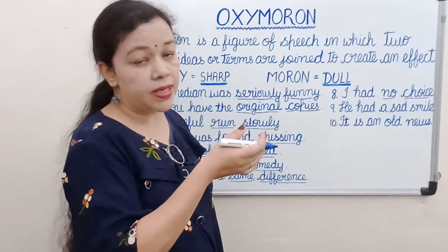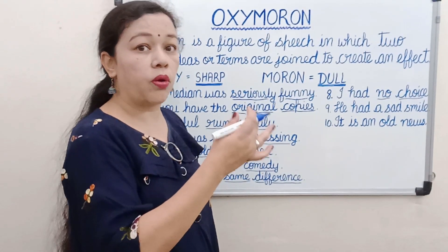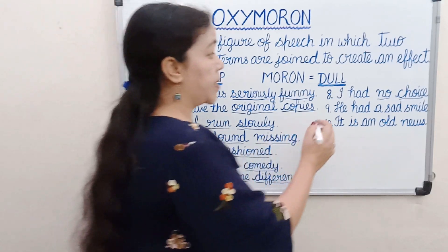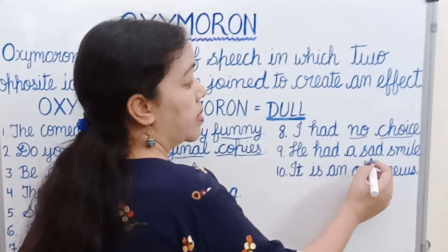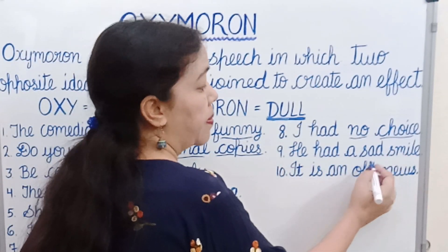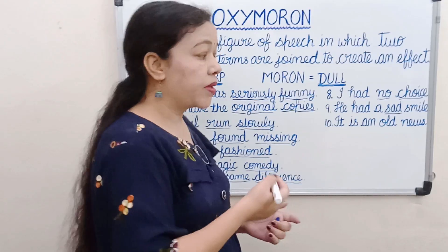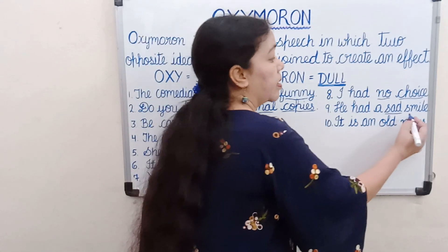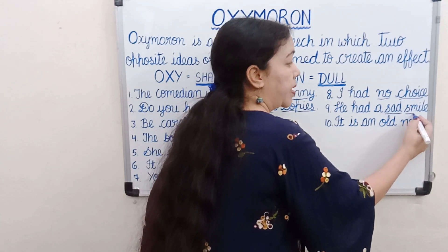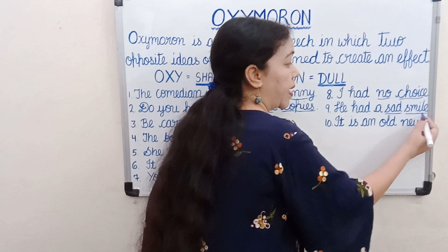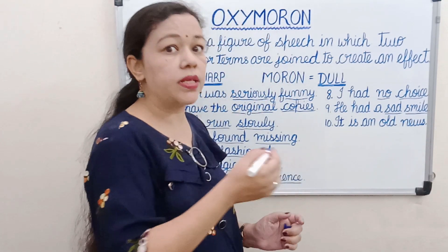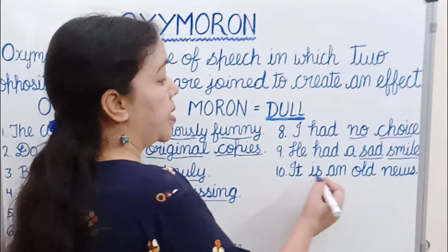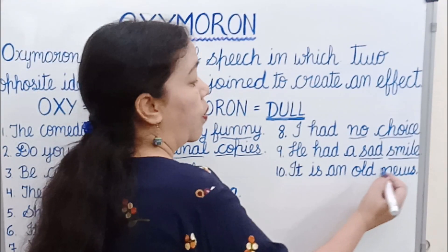Next: 'He had a sad smile.' When a person is unhappy he is sad, and if a person is happy he will smile — so both are opposite words coming together in a sentence, making it an oxymoron.